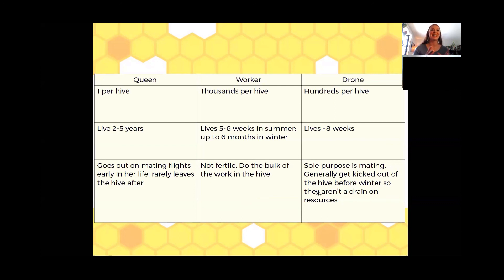Coming back to that drone and why they live eight weeks — their only purpose is mating. In the hive they do not produce wax, they do not forage, they're not bringing back nectar or pollen; their only purpose is mating. What drones do is eat the stores and the honey, then go out and fly around to see if they can find a queen to mate with. They'll come back to the hive if they haven't mated, and if they have mated, they end up dying.